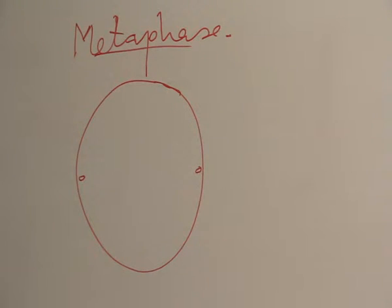Metaphase. At Metaphase this is what will happen. The centrioles are now at the polar end of the cell. They are in the opposite end of the cell. Then the chromatids, the pair of chromatids, are now found at the centre of the cell.